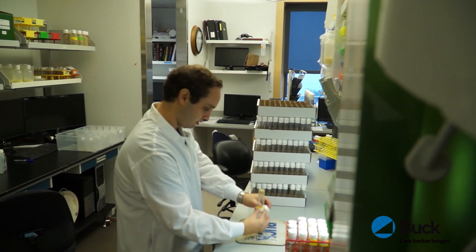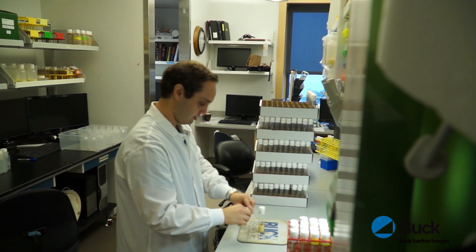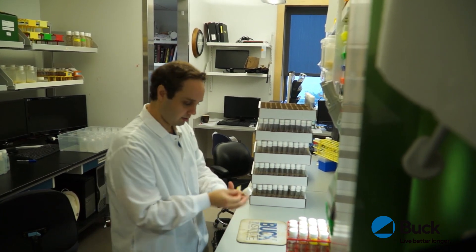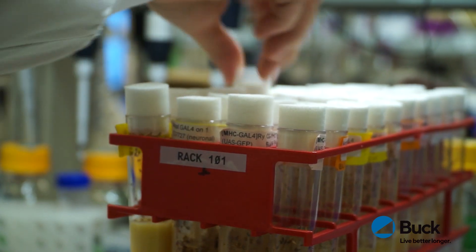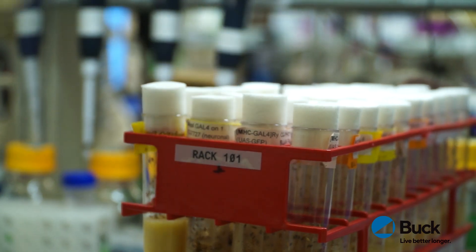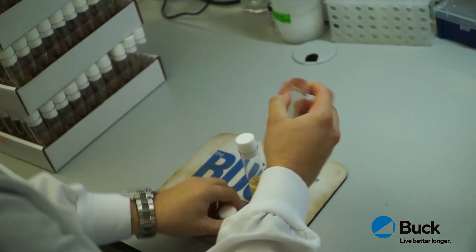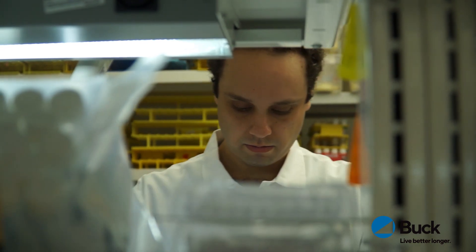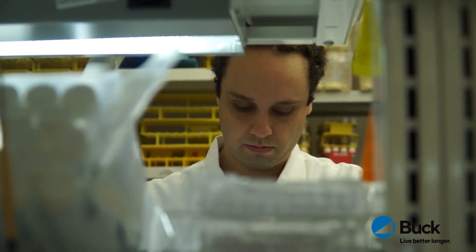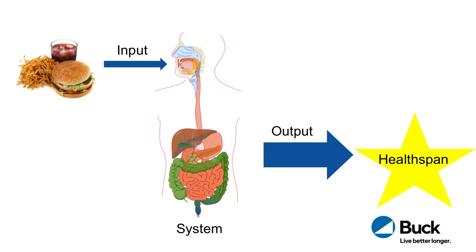One factor we need to look into in understanding how this works is the different aspects of our life that might influence the health span. What I have been looking into is how an input such as food influences the total system that is the human body. I want to understand different components of our food — for example, carbohydrates and proteins — and whether lowering or raising those levels can influence health span.